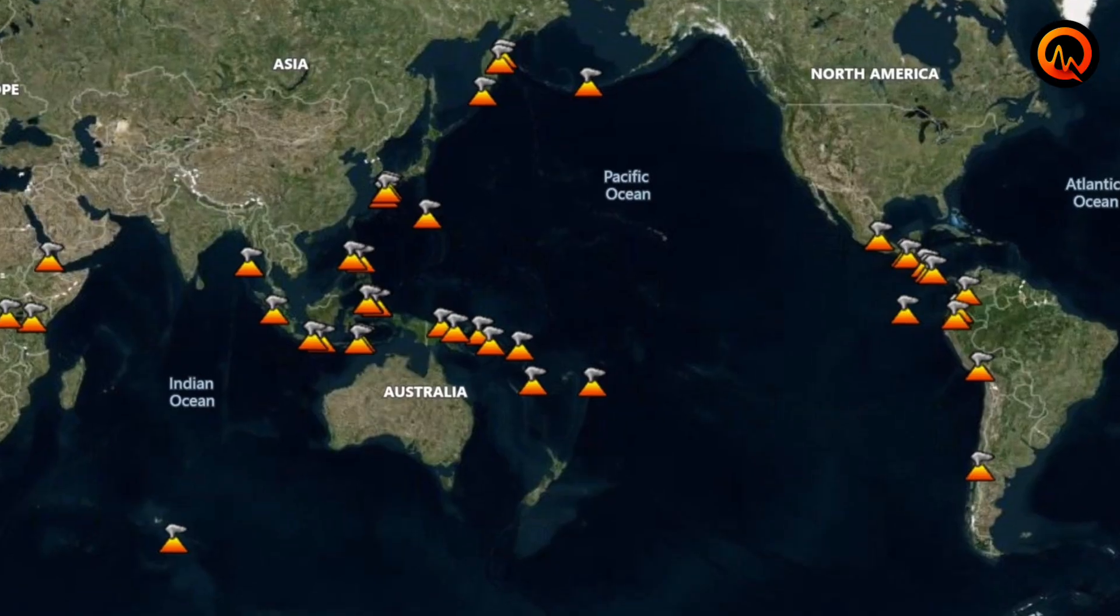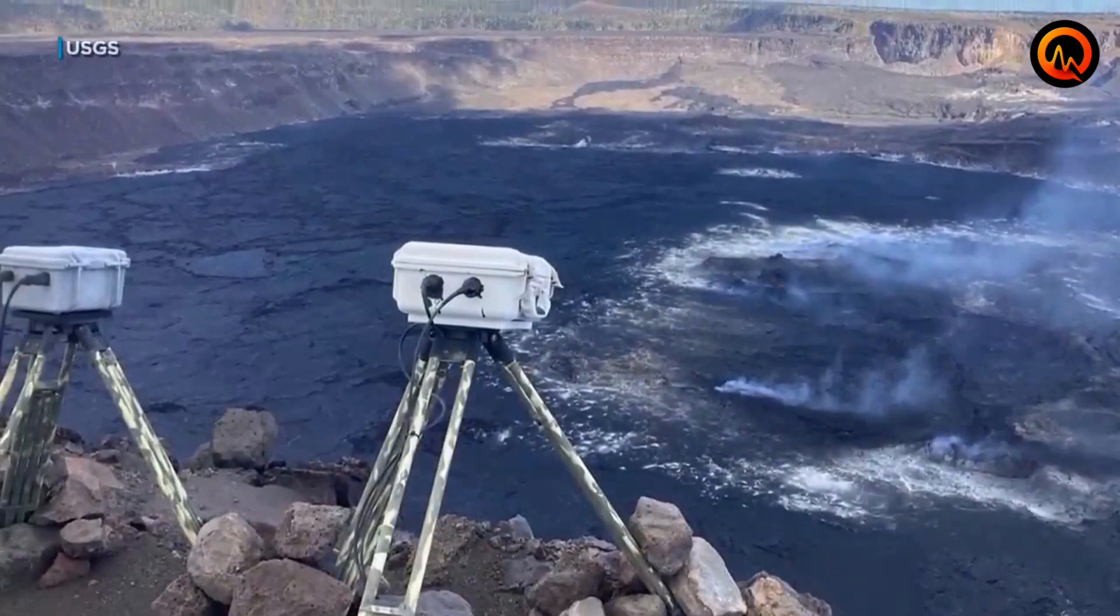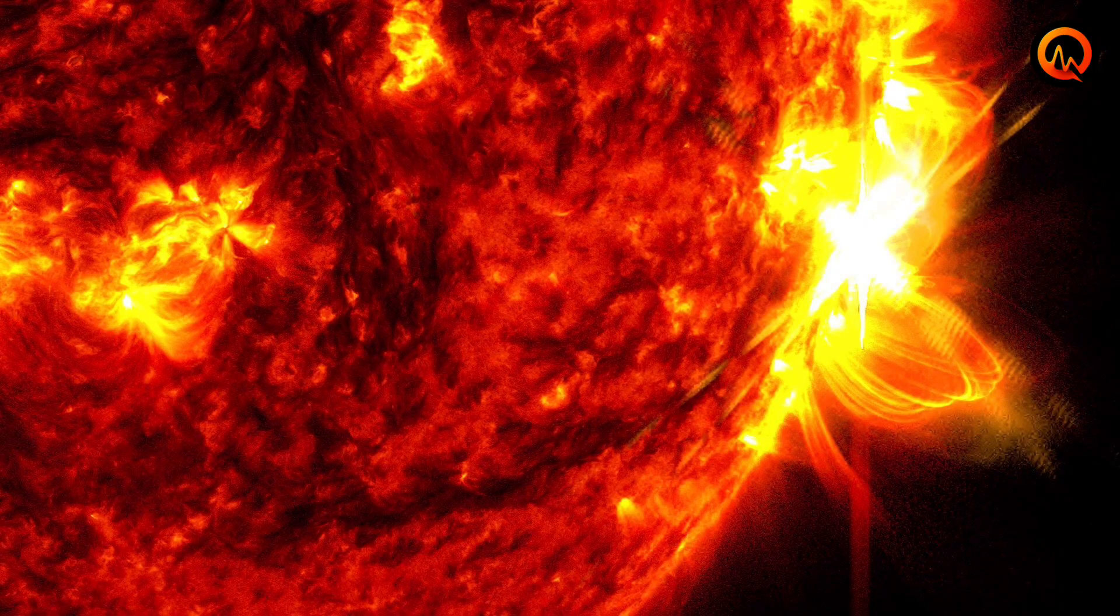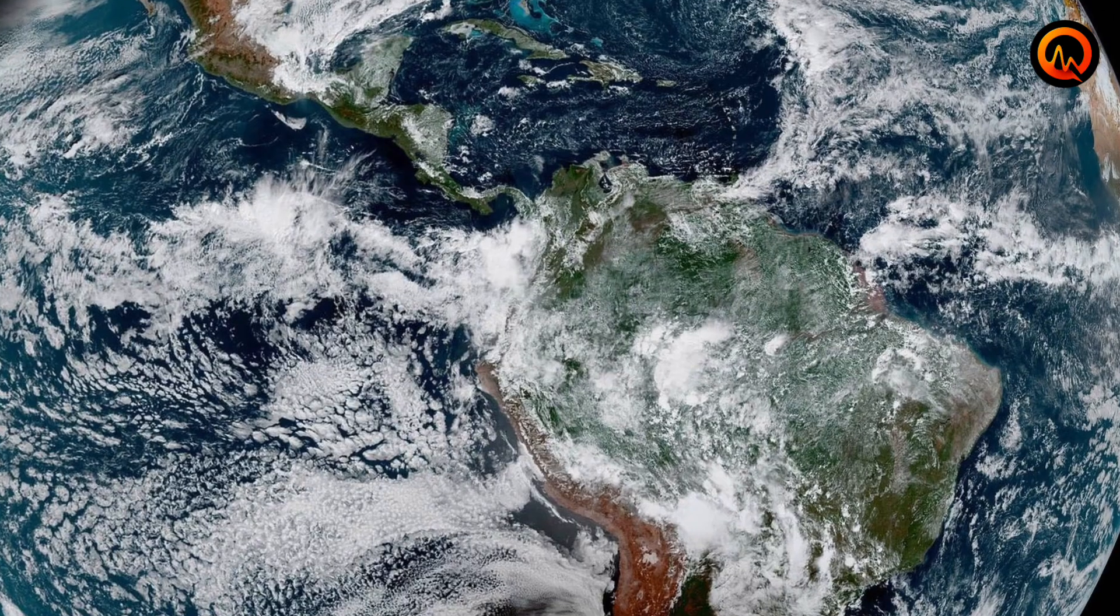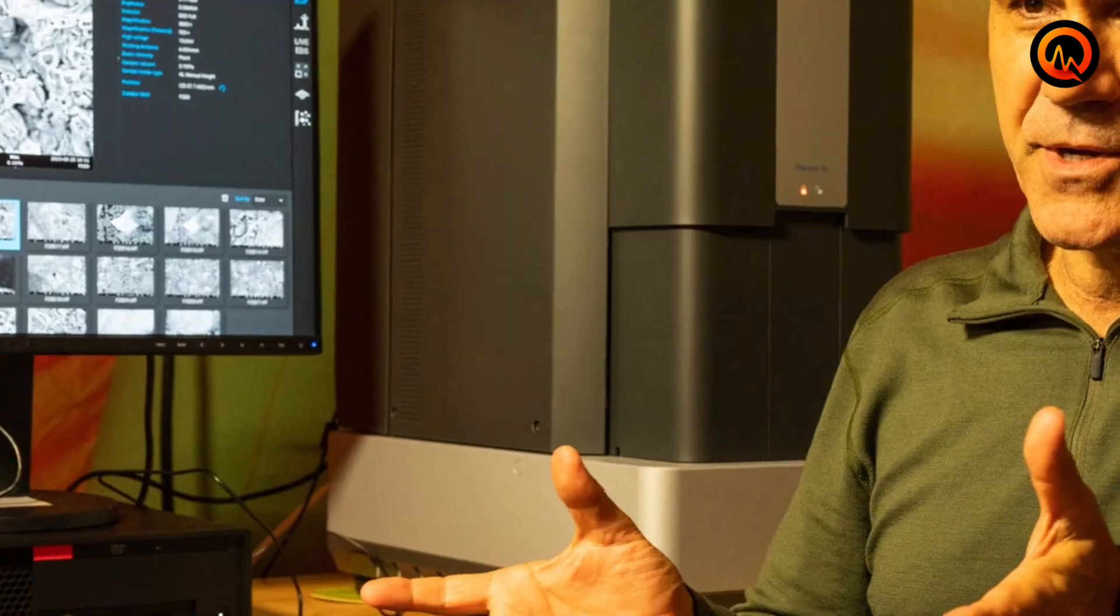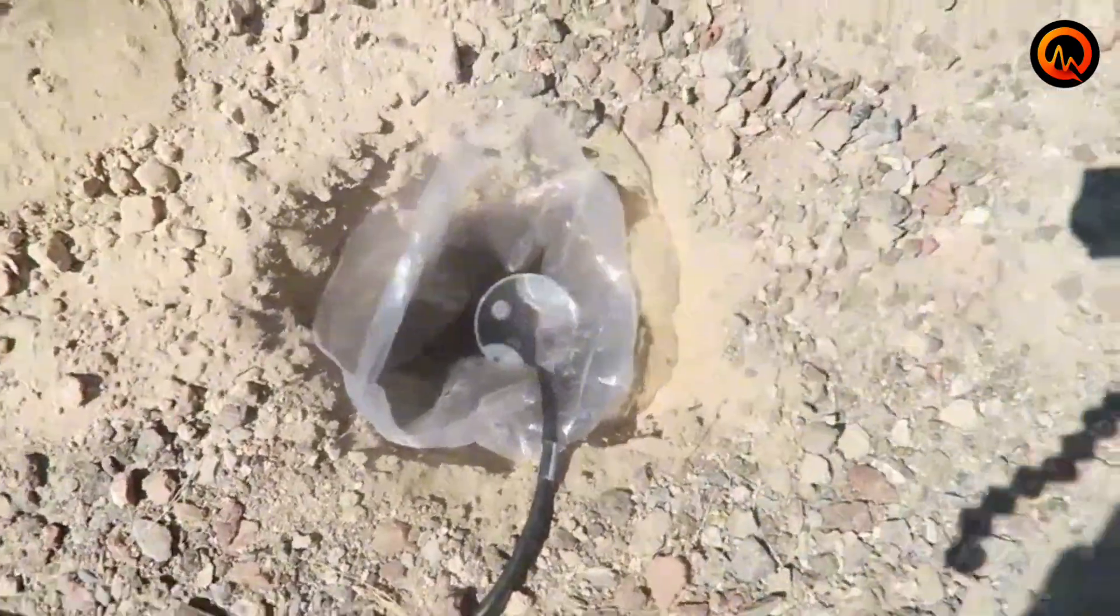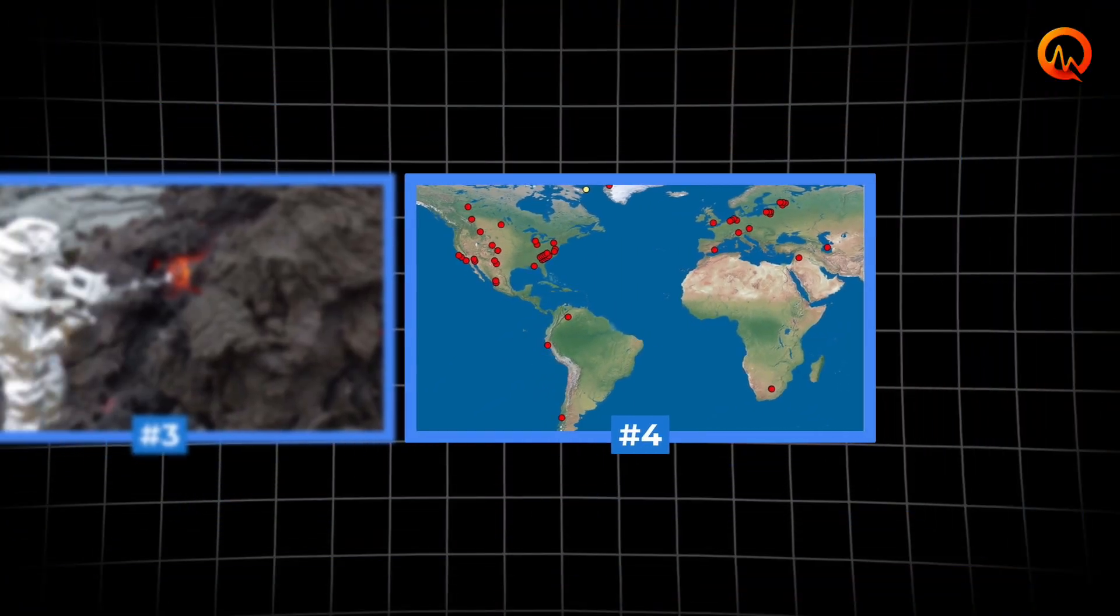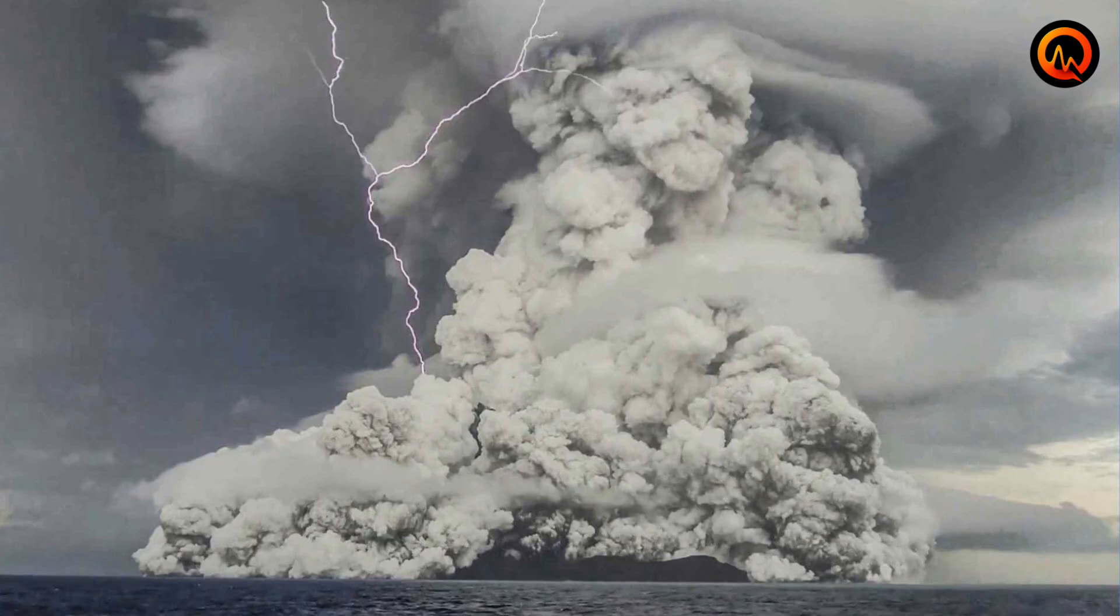When volcanic activity clusters like this across the globe, it signals something bigger building beneath the surface. The timing coincides perfectly with intense solar activity that bombarded Earth's magnetic field just weeks before these eruptions began. What you are witnessing is a rare planetary-scale geological event. The connection between solar storms and volcanic activity is not science fiction. It is a mechanism that scientists are actively studying. Today we will examine the evidence behind this surge and what it means for regions sitting on active volcanic zones.